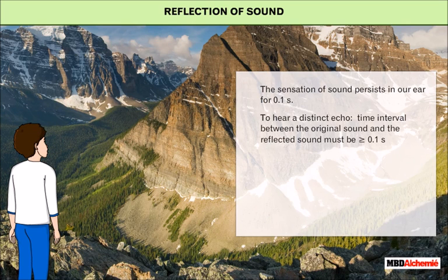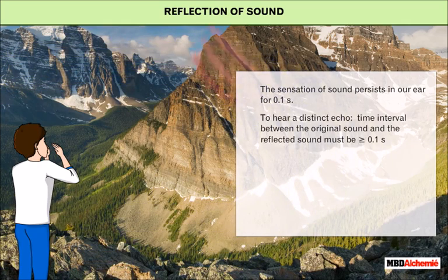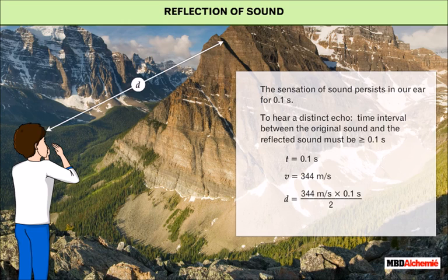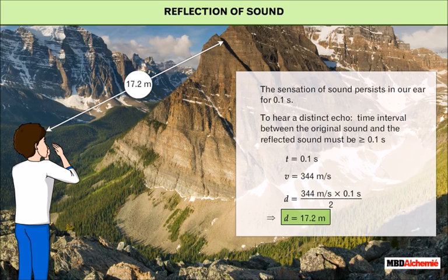The sensation of sound persists in our ear for about 0.1 second. Thus, to hear a distinct echo, the time interval between the original sound and the reflected sound must be greater than or equal to 0.1 second. By substituting t = 0.1 second and v = 344 meters per second in air, we get d = 344 × 0.1 / 2, which is equal to 17.2 meters. Therefore, to hear the echo distinctly, the reflecting surface should be at a minimum distance of 17.2 meters from the listener.